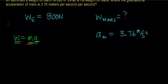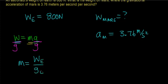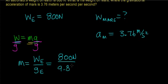To figure out your mass, what you're going to do is take both sides of this equation and divide it by the gravitational acceleration. Divide by g, and your mass now equals your weight here on Earth divided by the gravitational acceleration here on Earth. In this case, you've weighed yourself and you weigh 800 newtons. When you divide 800 newtons by 9.8 meters per second squared, you get 81.6 kilograms.